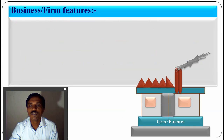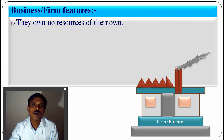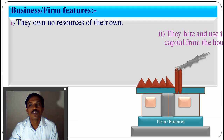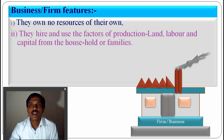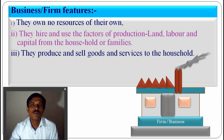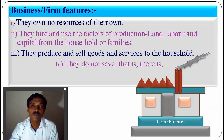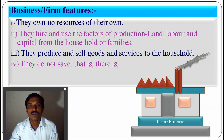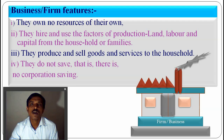The businesses or firms also have some features. Businesses have no resources of their own; they just collect resources and produce goods. They hire and use the factors of production — land, labour, and capital — from the household or families, and produce goods and services. They sell goods and services to the household and receive income in monetary form. There is no corporate saving, and no saving from the family side either. Income flows in a circular manner from one sector to the other.